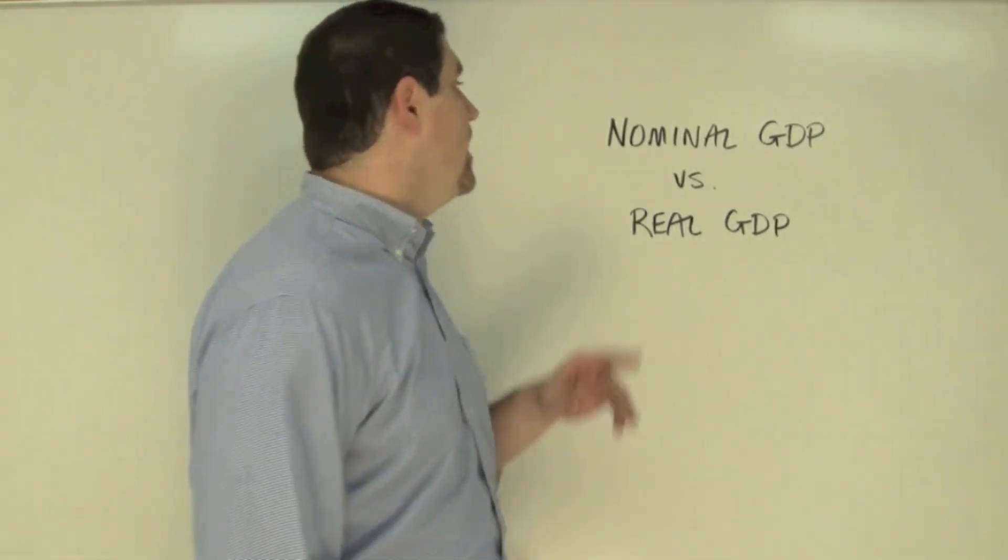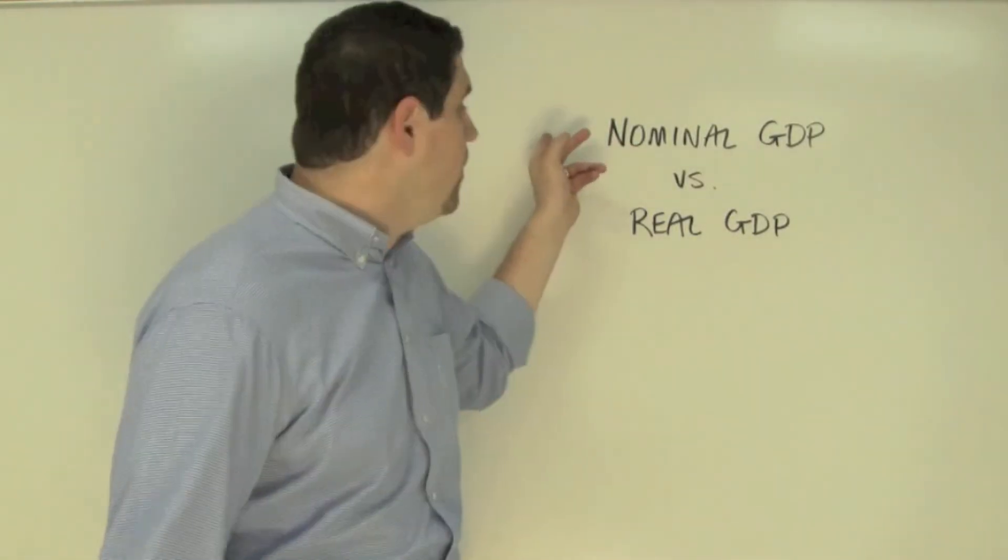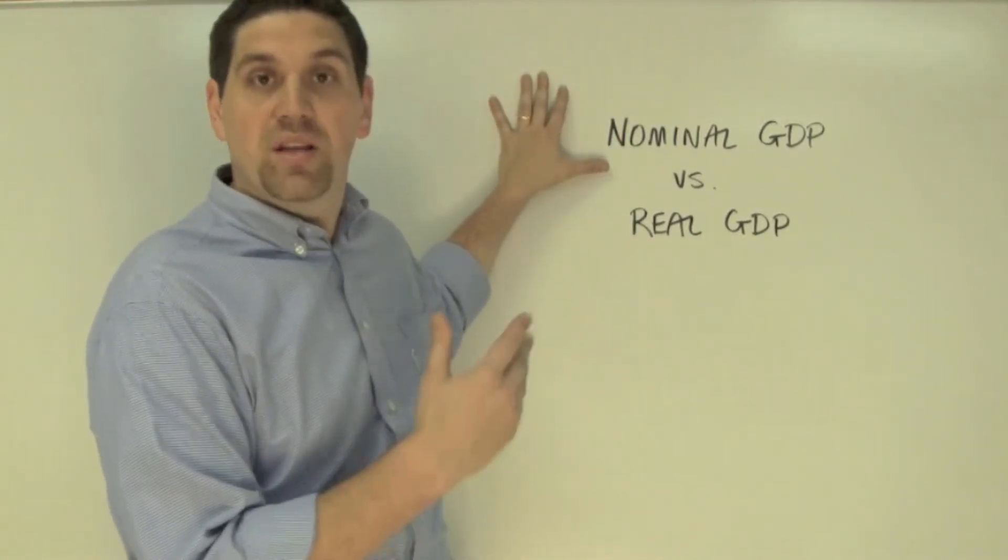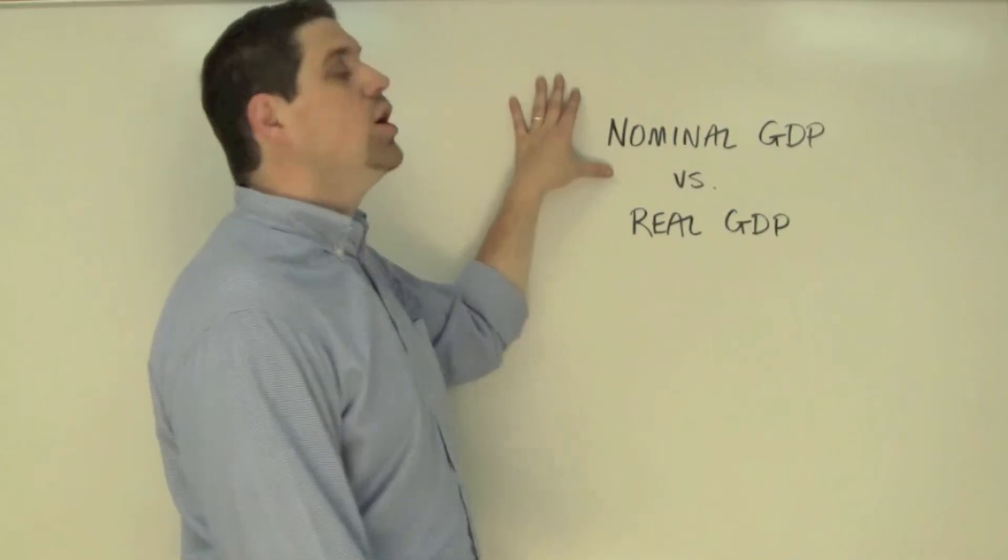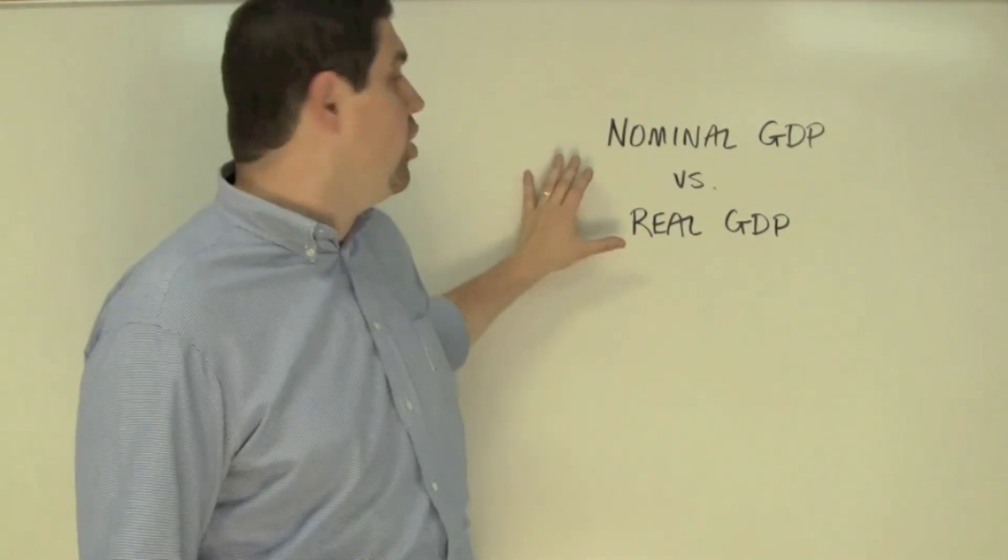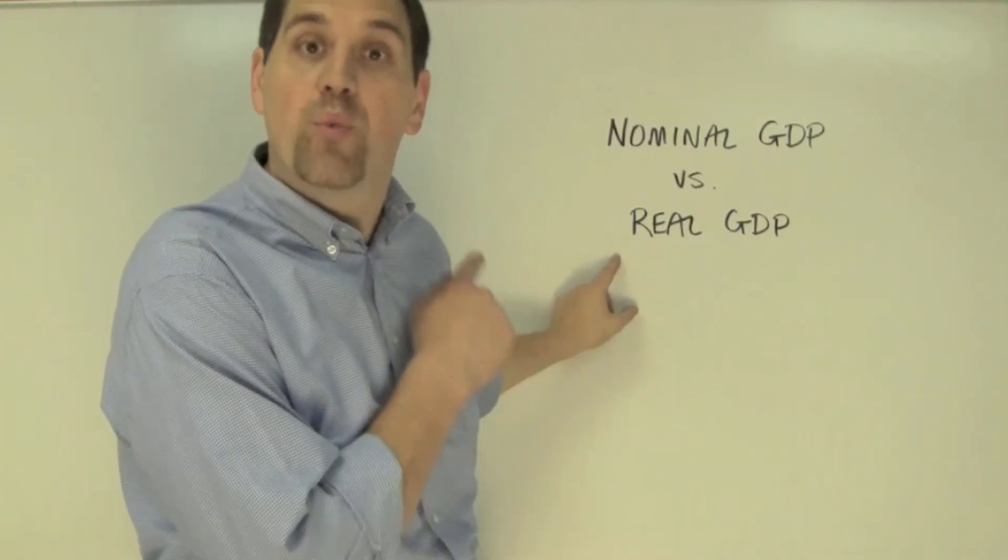Now C is incorrect because an increase in nominal GDP does not mean we necessarily had an increase in real GDP. It could have been just because inflation went up and that's why nominal GDP is higher. D is incorrect because an increase in nominal GDP doesn't necessarily mean that we had higher inflation. It could have been because we actually did have more output, more real GDP.